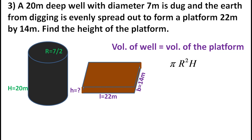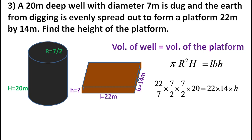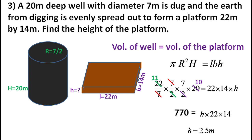Using the formula: volume of cylinder = π r² h (for the well), and length × width × height for the platform. Substituting and solving, the height of the platform is 2.5 metres.